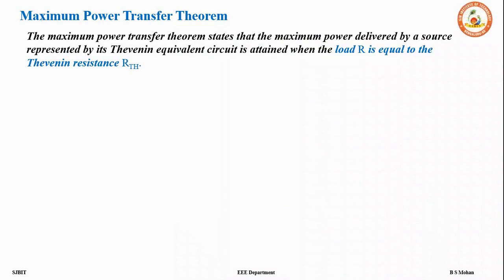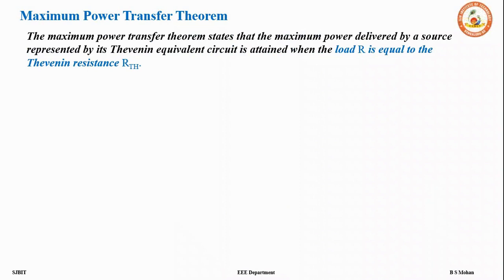Let's see the statement of the theorem. It says the maximum power can be transferred from the source to the load only when the value of RL, that is your load resistance, is equal to your Thevenin equivalent resistance. So this theorem takes the help of Thevenin theorem. When solving problems, we will actually be applying the Thevenin equivalent circuit.